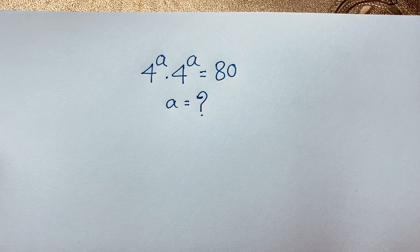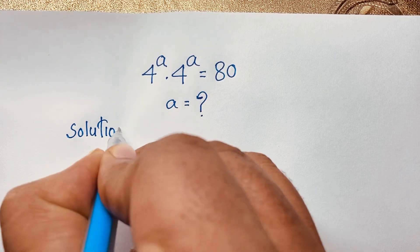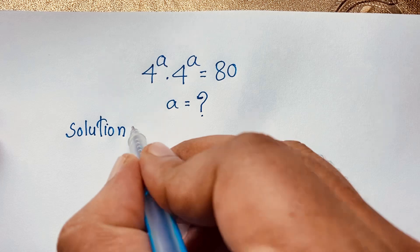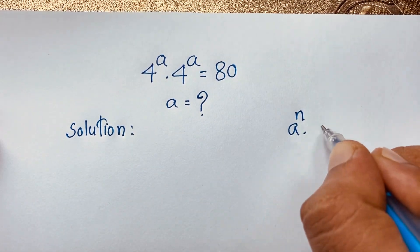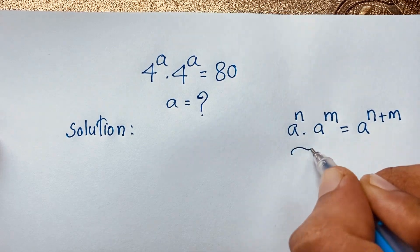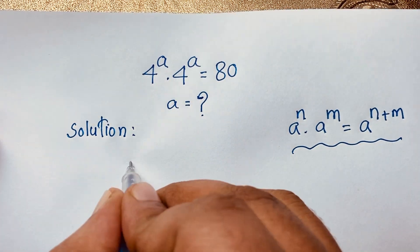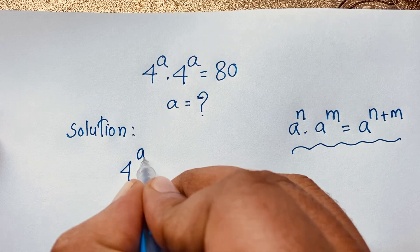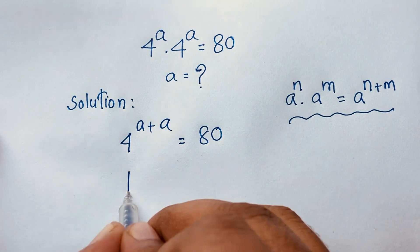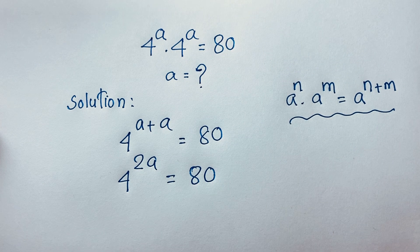For the solution, we have 4 to the power a times 4 to the power a. We know that a to the power n times a to the power m equals a to the power n plus m — this is our exponential formula. Using this, 4 to the power a plus a is equal to 80, which gives us 4 to the power 2a is equal to 80.